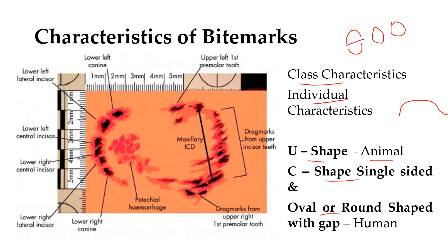A depiction of the injury shows how maxillary injuries are inflicted on the body. Drag marks from the upper incisor teeth can be observed moving inward, along with upper left first premolar injury and drag marks of the first premolar on the right side. Canines cause significant injury impact due to their sharpness. On the mandibular side, a clear appearance of each tooth can be observed.